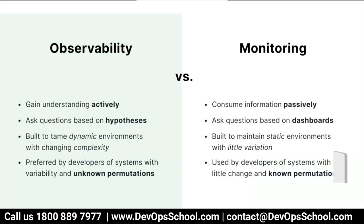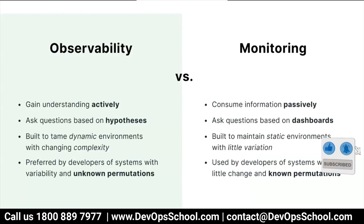Observability gains understanding actively; monitoring consumes information passively. Observability asks questions based on hypothesis — why is it not working? Monitoring asks questions based on the dashboard. In summary, observability is a property of the system and monitoring is an activity we perform on a system.